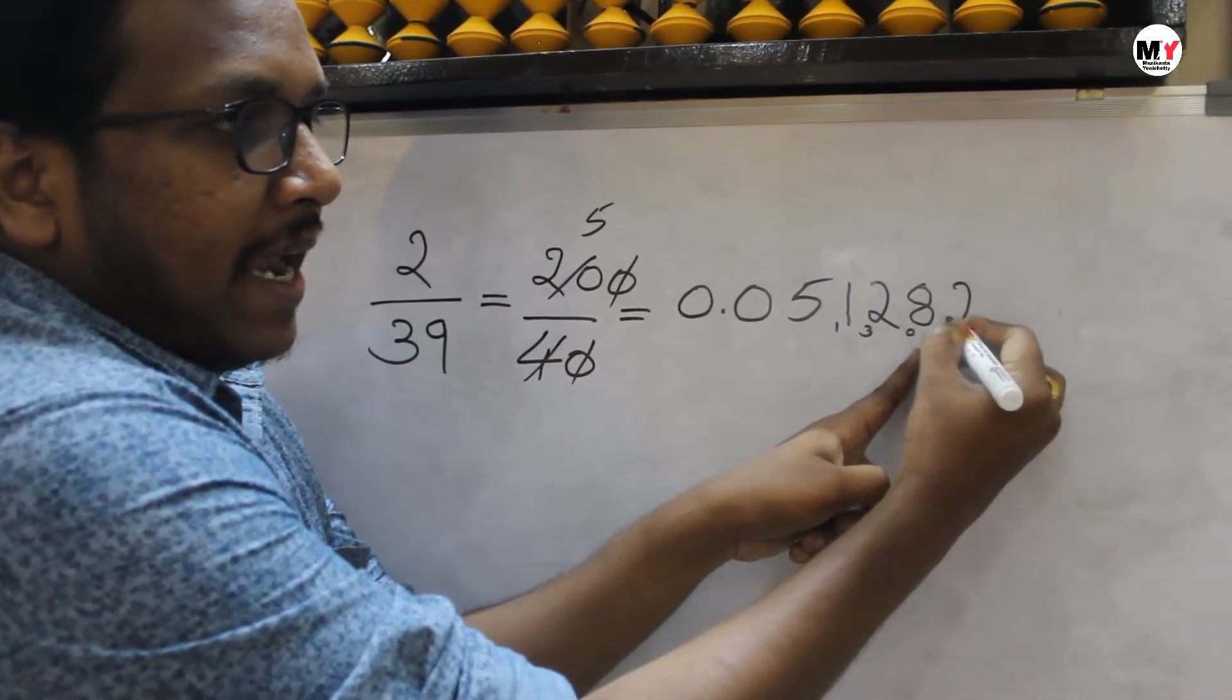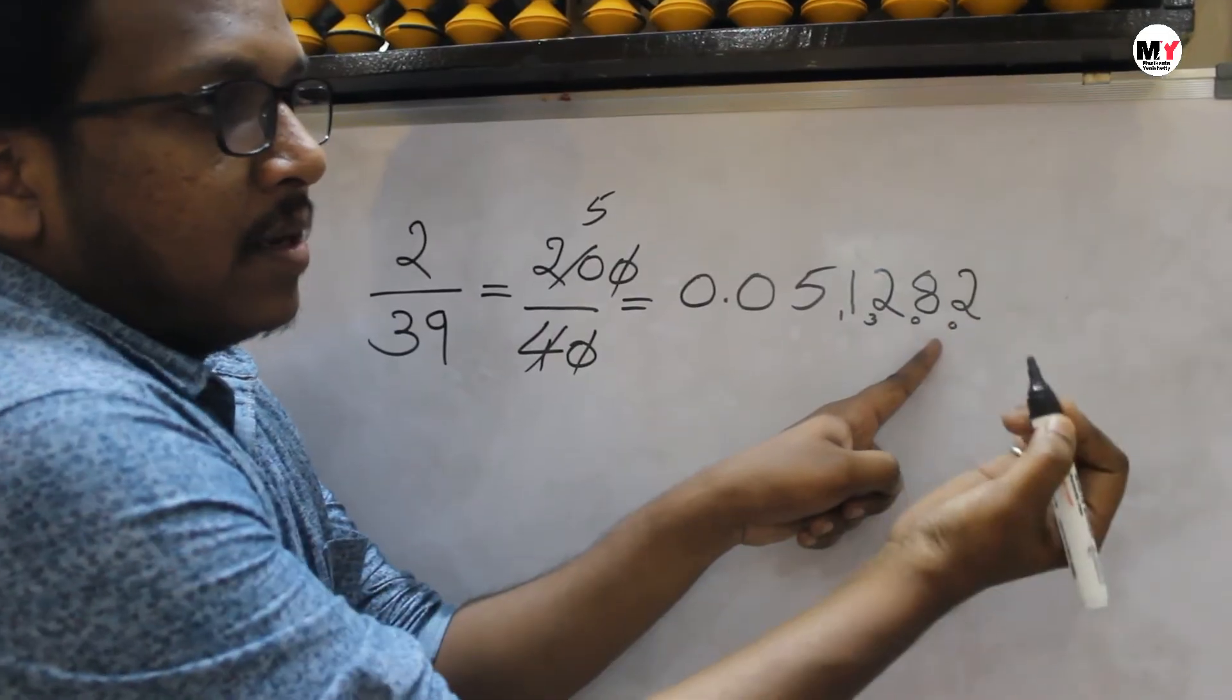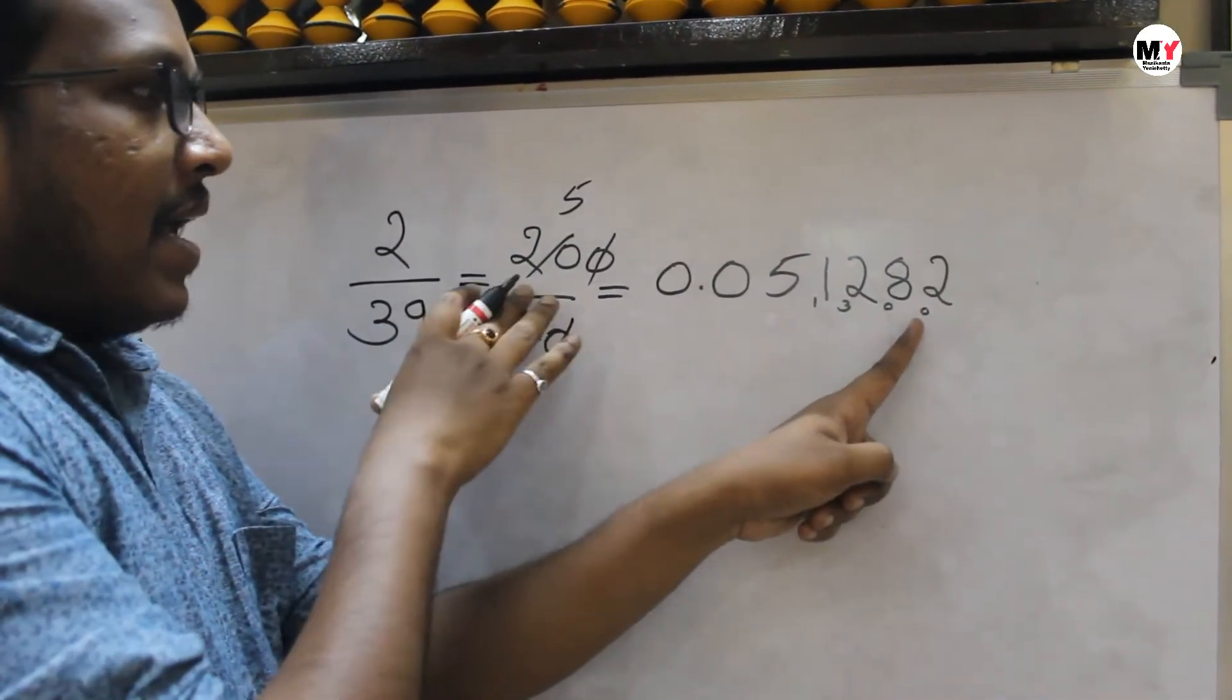4, 2's are 8, no reminder. So this is the way how you divide.